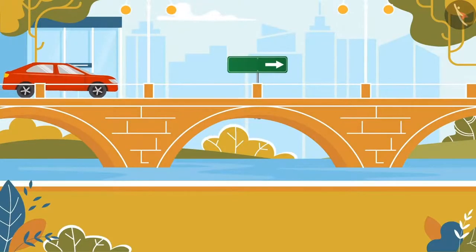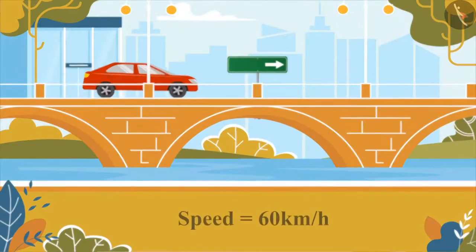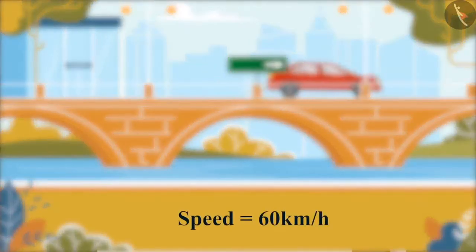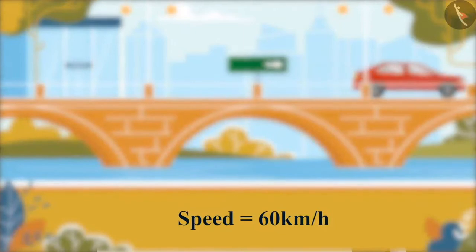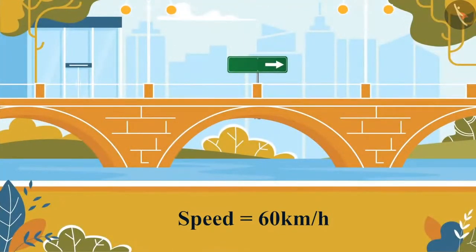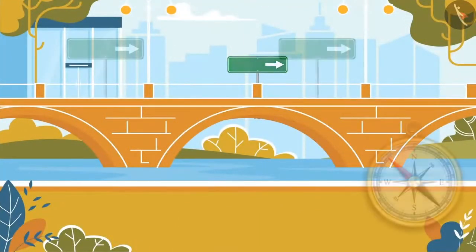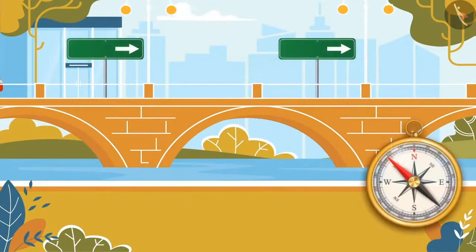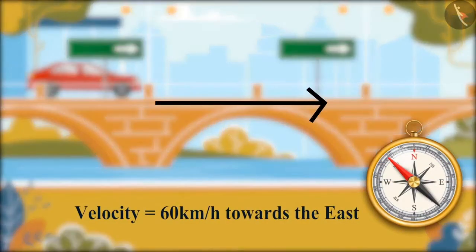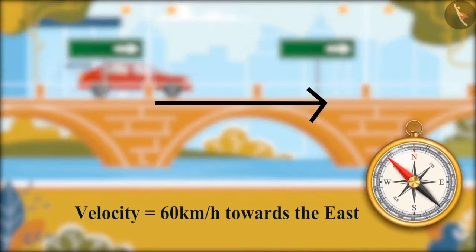So, if a car is going at 60 km per hour, this is its speed. But when we say the car's speed is 60 km per hour towards the east, then it becomes velocity.